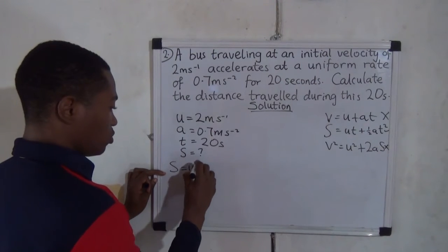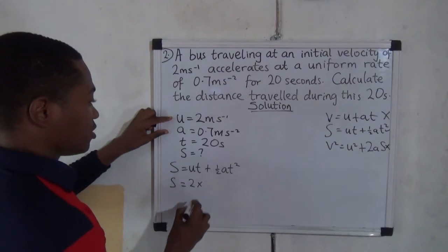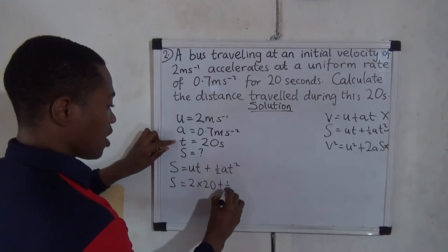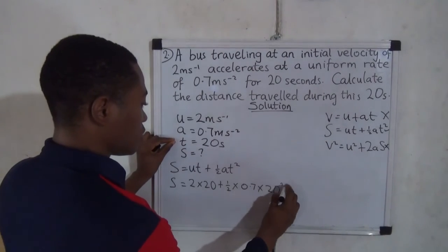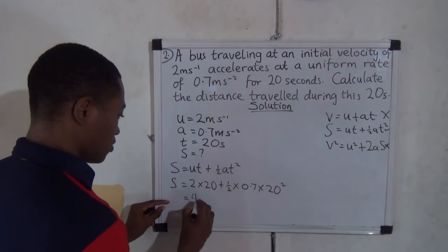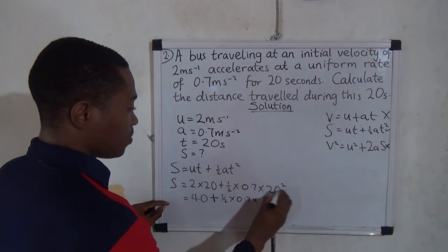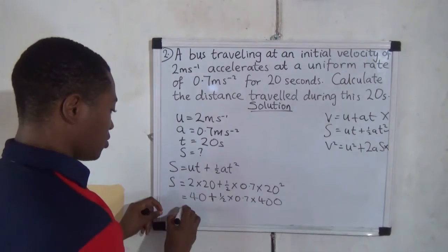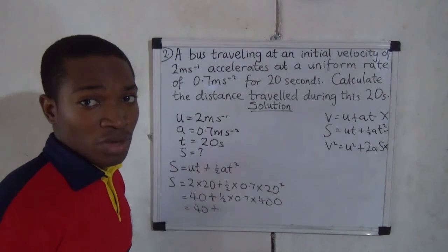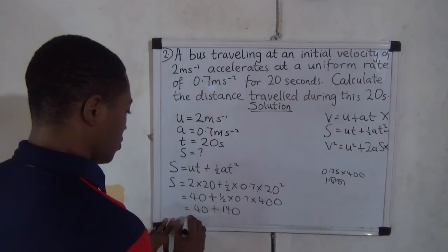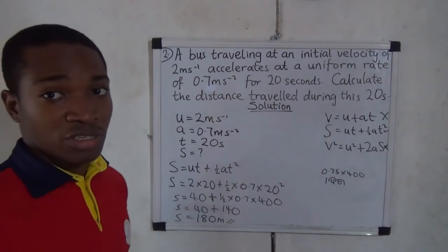S = UT + ½AT². S equals U (which is 2) multiplied by T (which is 20), plus half multiplied by A (0.7) multiplied by T squared (20 squared, which is 400). That equals 40 plus 0.35 multiplied by 400, which is 140. So S equals 40 plus 140, which equals 180 meters. That is our answer. You must include the unit meters, which is the SI unit of distance.